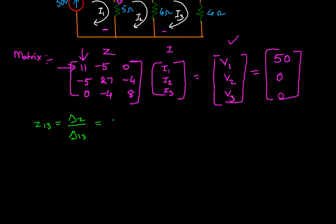That is equals to delta z. We know that it is 2000 by delta 13. How we can calculate delta 13 is minus 1 of whole power 1 plus 3 modulus of, so you have to delete the first row and the third column.